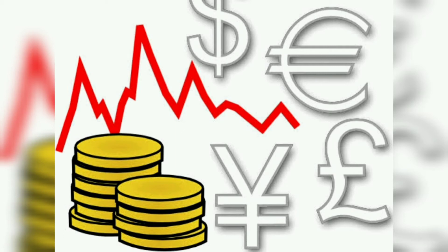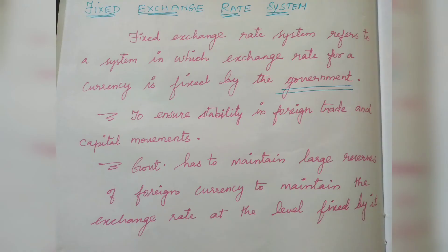Each country keeps the value of its currency fixed in terms of some external standard, or some internationally agreed unit of account. When the value of domestic currency is tied to the value of another currency, that is known as pegging. That is why this fixed exchange rate system is also known as pegging.